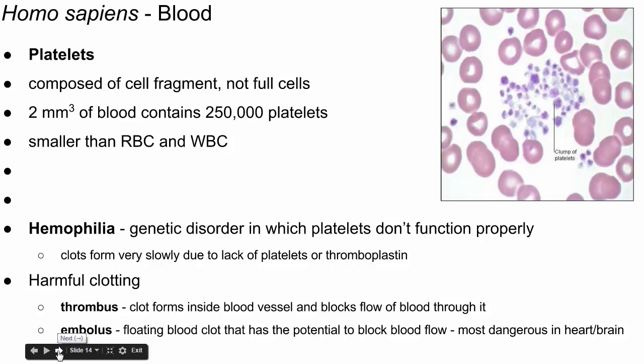We have two more components of blood to talk about: platelets and white blood cells. Starting with platelets — their function is blood clotting. Platelets are responsible for the clotting of our blood. They're not really cells; they're cell fragments — they don't have all the organelles. They're smaller than red blood cells. In a couple cubic millimeters of blood, there are about 250,000 platelets, and they are responsible for the clotting of our blood.